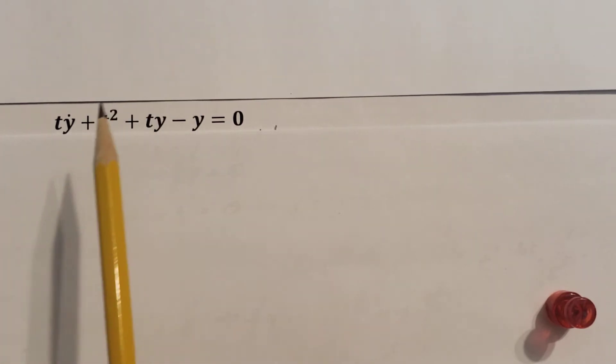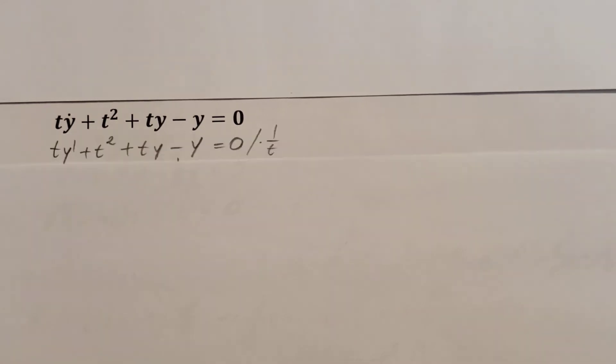First, divide by t. This will get rid of this one and it's going to allow us to have it in proper form where we're going to have a one at the beginning. Here it is now, our y' has only a one in front of it and all these terms are reconfigured now.